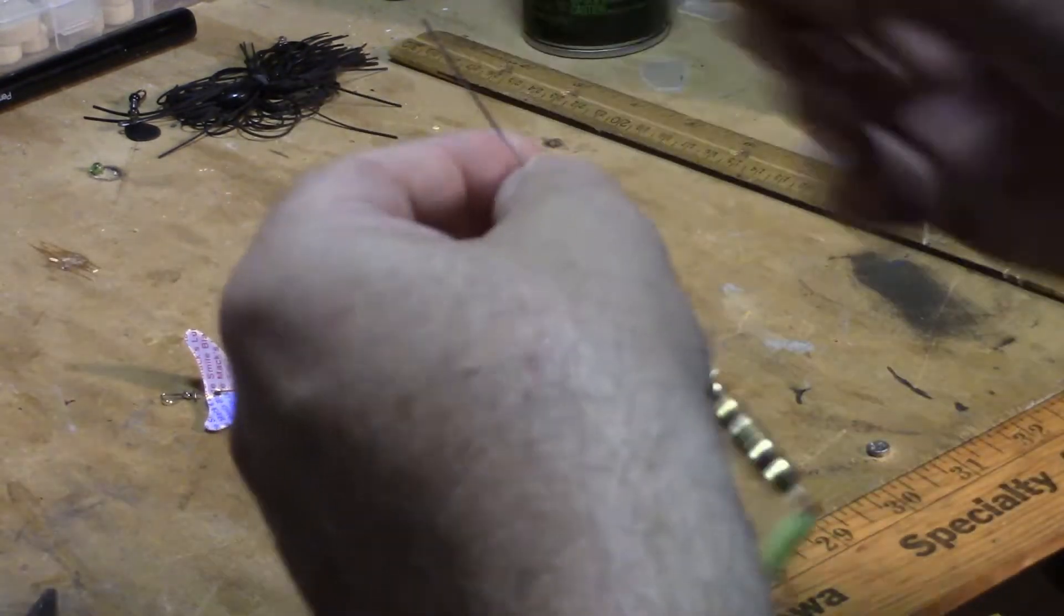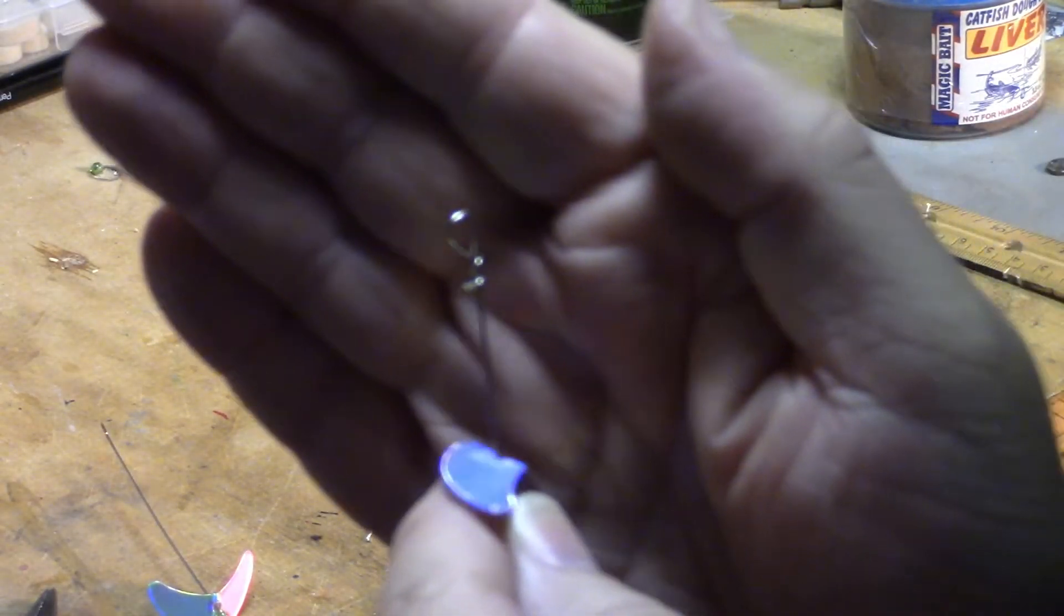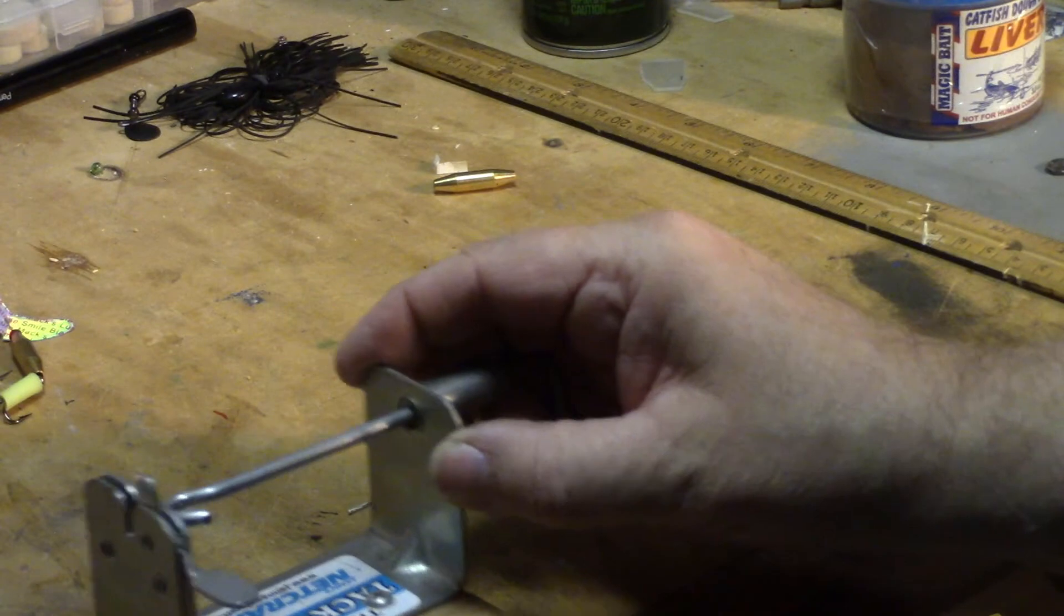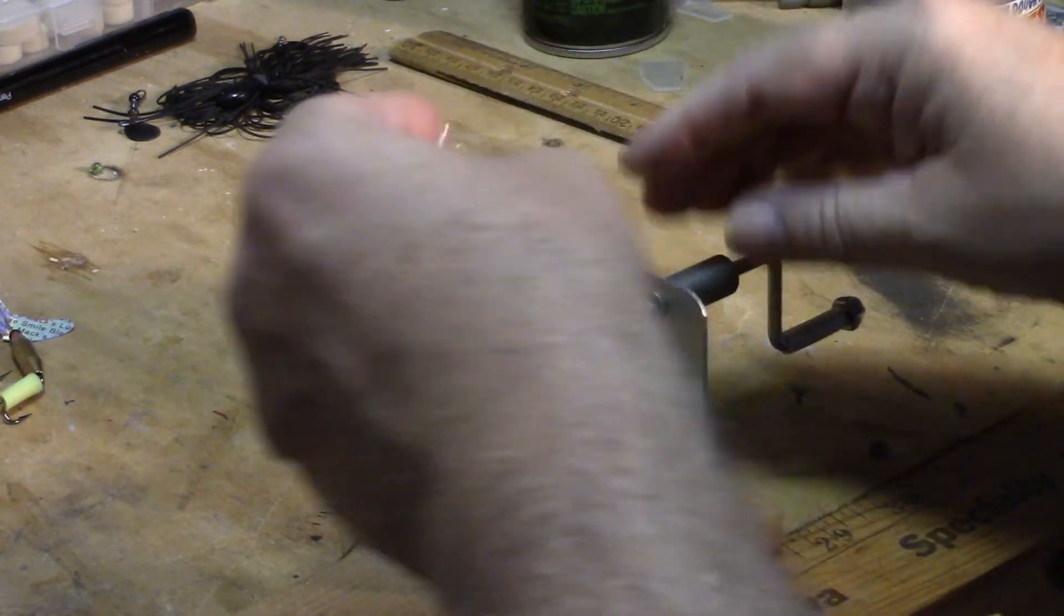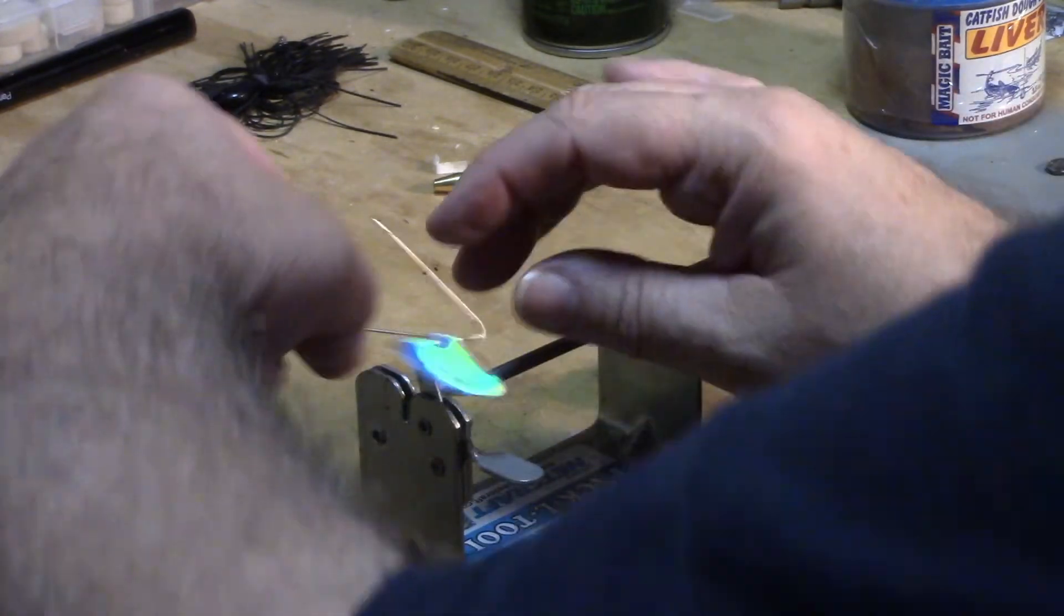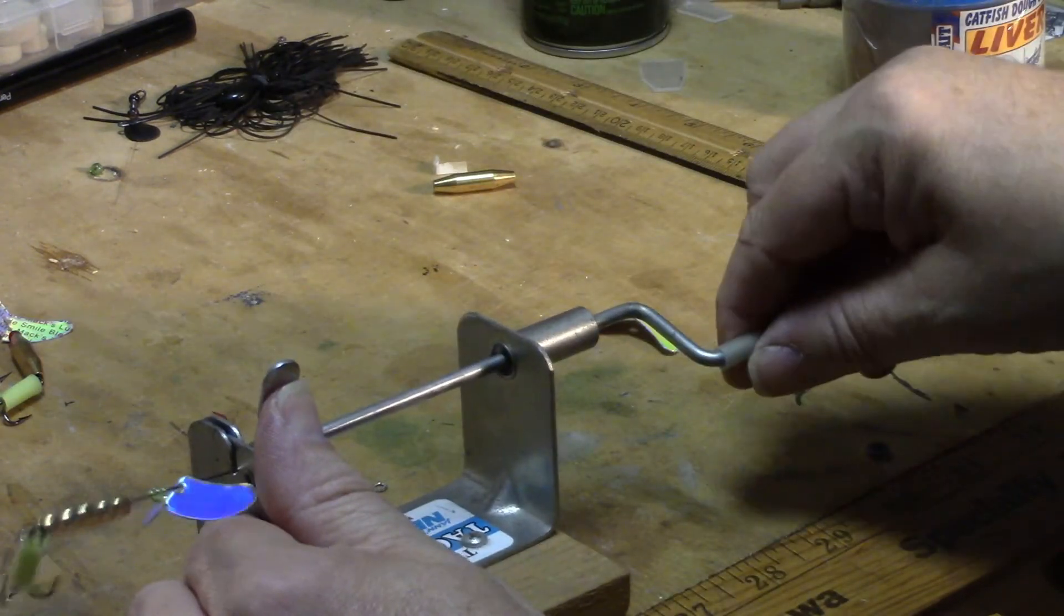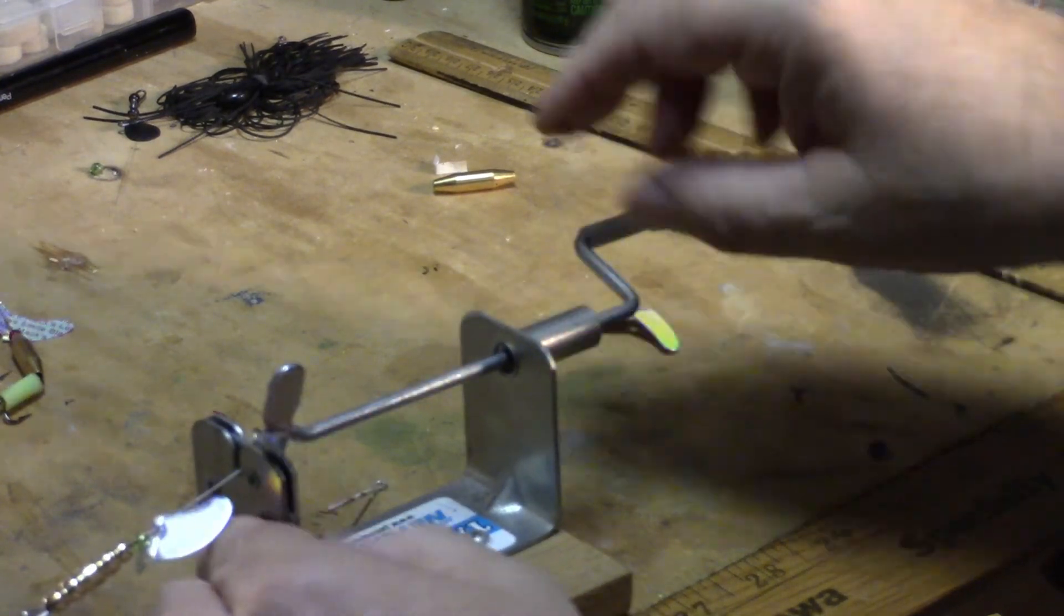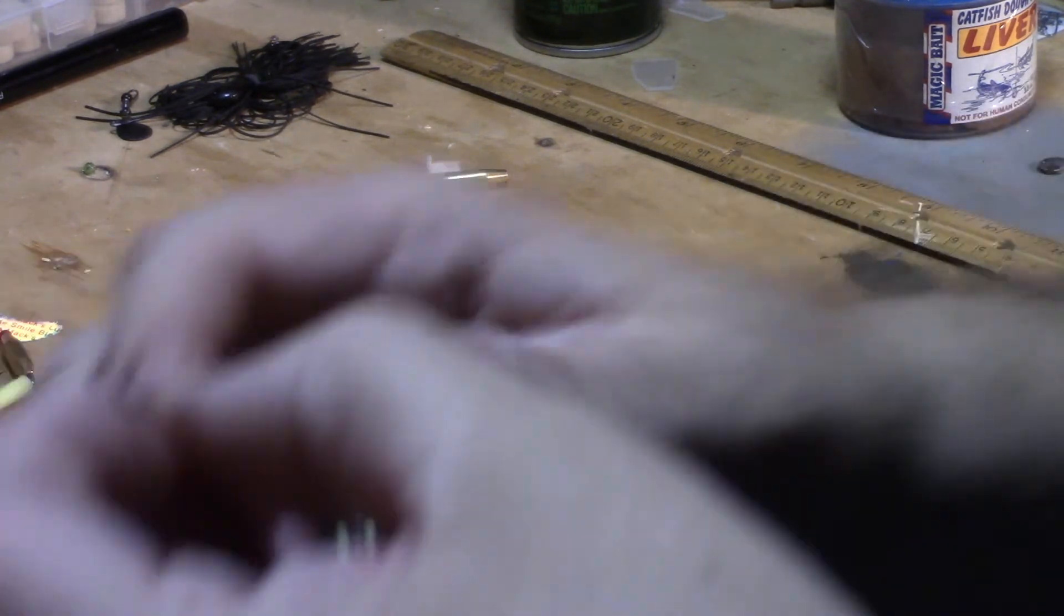And then all you got to do is your end here. Got to make that little loop which is easy to do. You can do it with a pair of pliers. Again I'll have a link to how to do that in another video. You can also use the tackle tool which I prefer. And I'll put a link to this tool because I'm not going to explain how to use it right now. Cut that little tag end off.